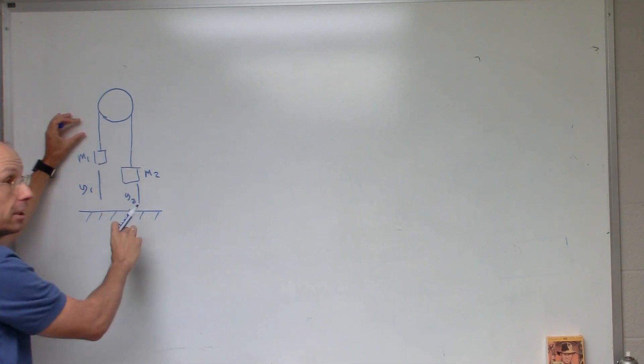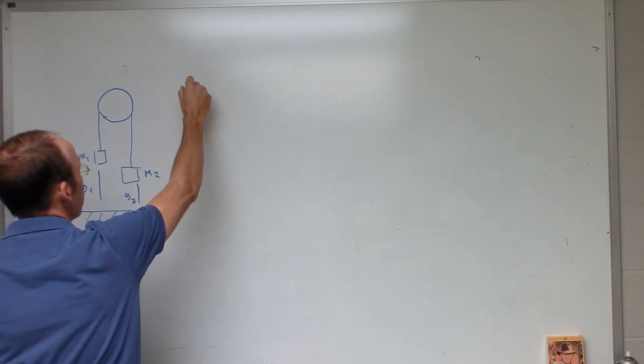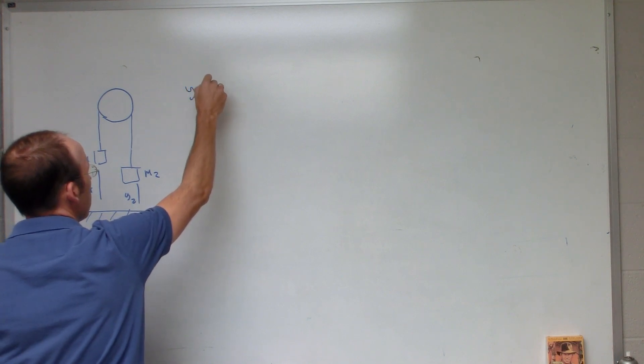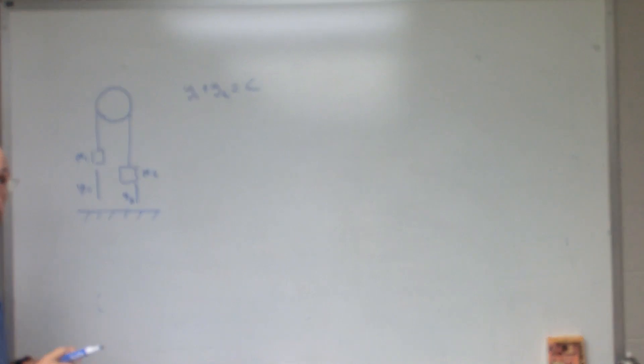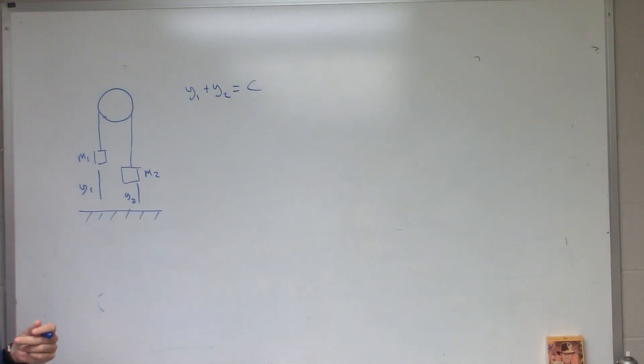If this one moves up, that one has to move down. So I could write the equation of constraint as Y1 plus Y2 equals some constant. And so with that, I could actually get down to one degree of freedom. So I could just choose one coordinate. I'm gonna use this Y1. I'll just call it Y to describe the whole situation. If I know that value, I can tell you where it is.